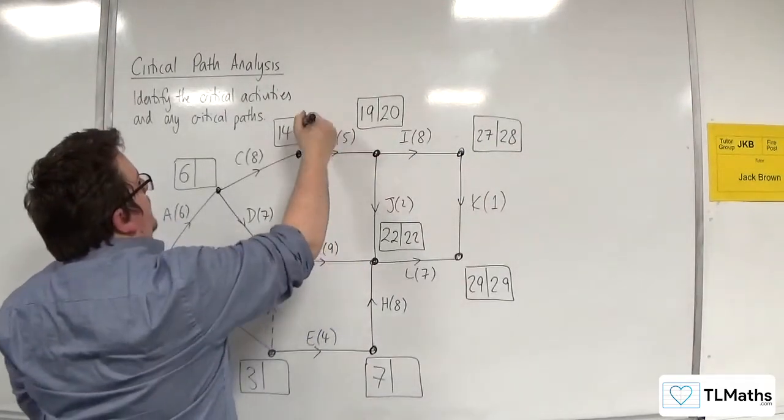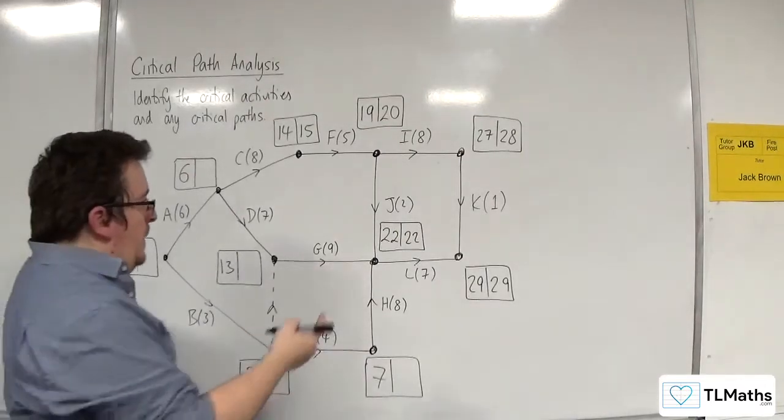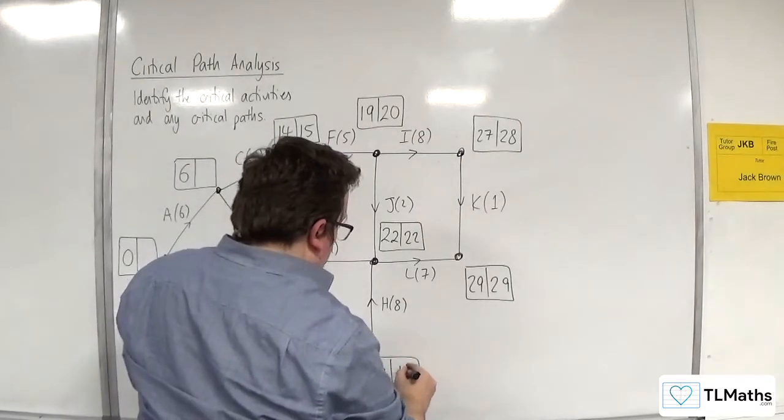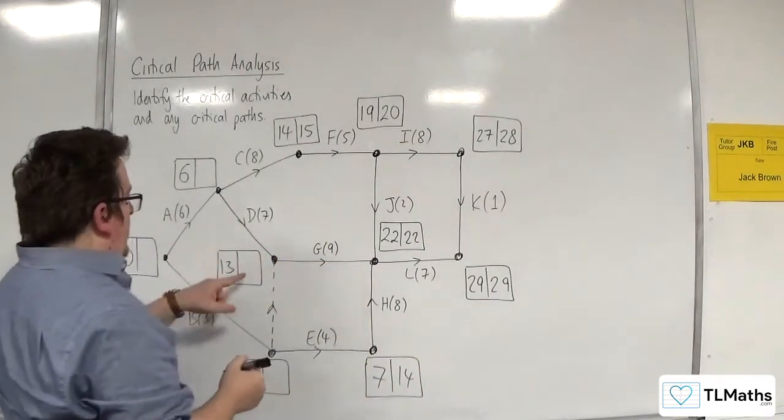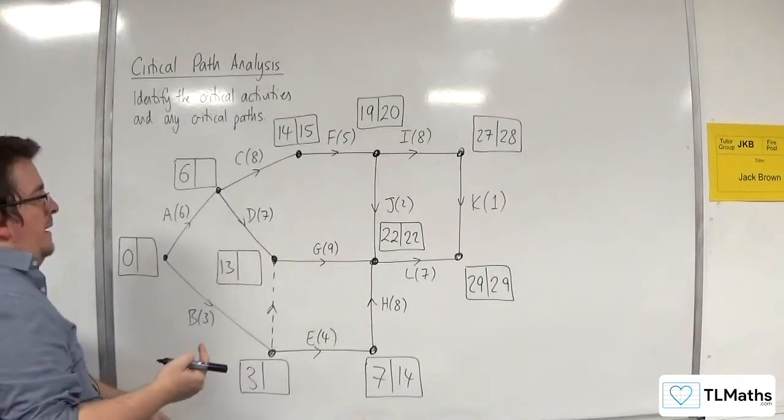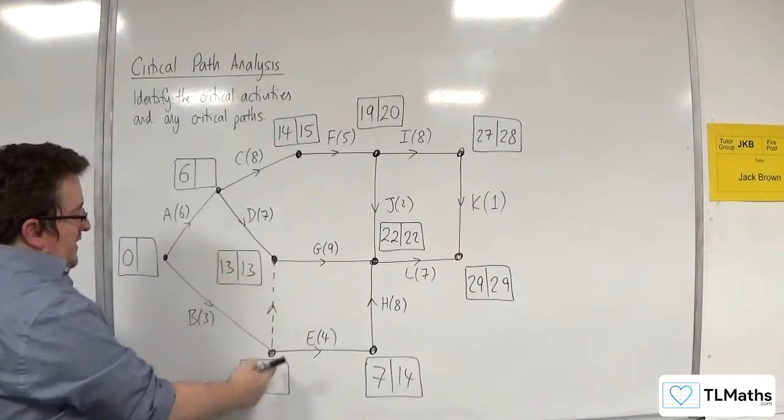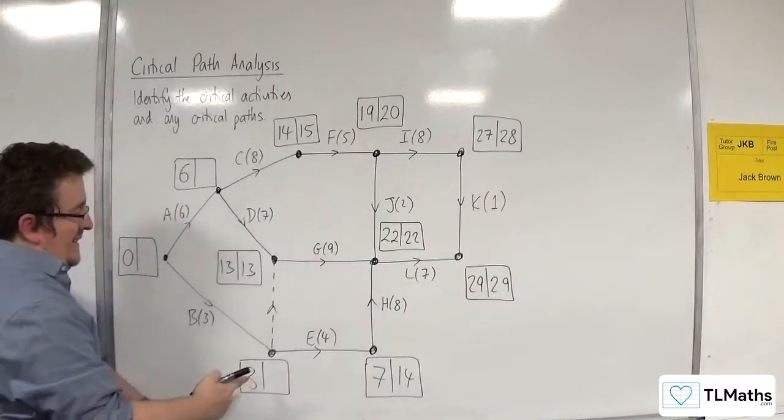20 take away 5 is 15. 22 take away 8 is 14. For this one, 22 take away 9 is 13. For here, we've got 13 take away 0, so 13, or 14 take away 4 is 10.